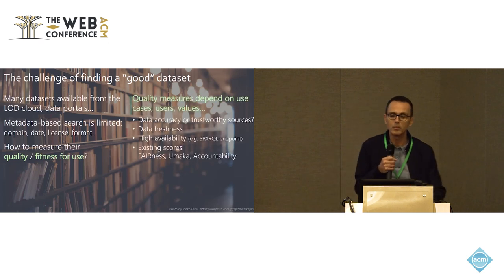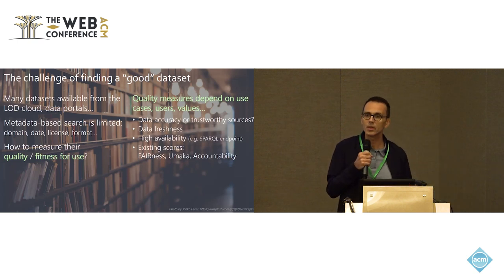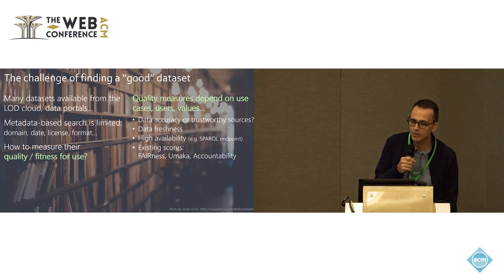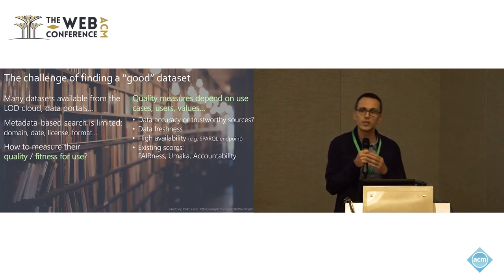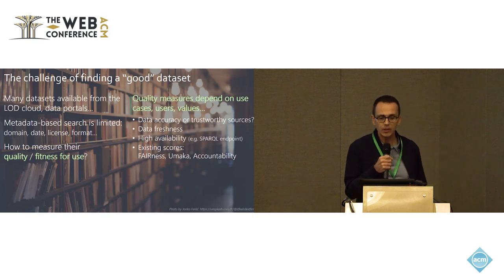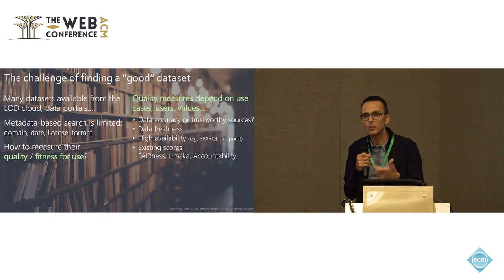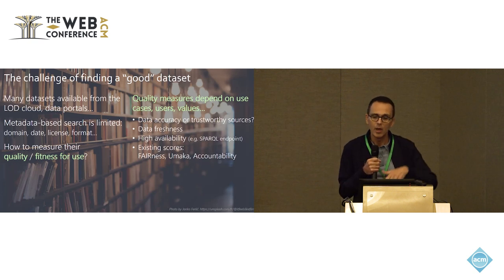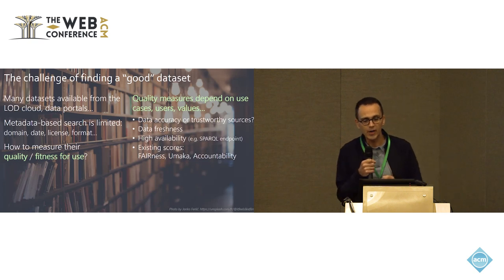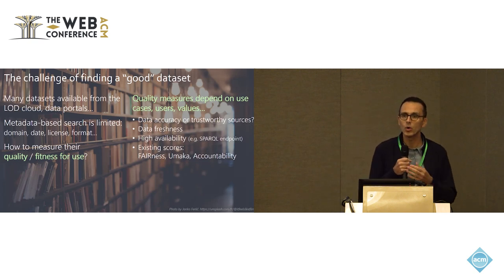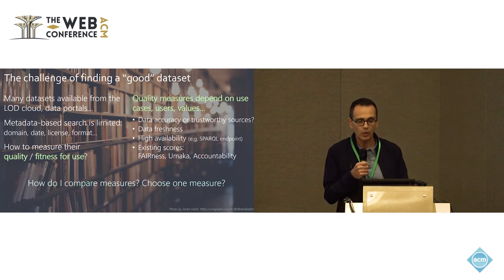What quality means depends really on the use case, the users, the values, and there are lots of different choices. For instance, I might be interested in very accurate data, or data that comes only from very trustworthy sources. I could be interested in fresh, very recent data, or data served by APIs like SPARQL endpoints that are highly available. There are also lots of other quality scores like fairness, Humica score, and accountability.